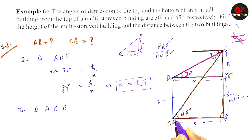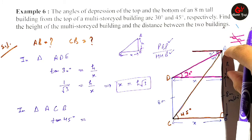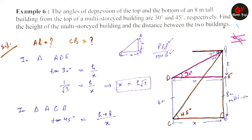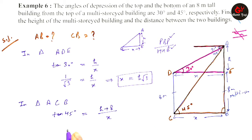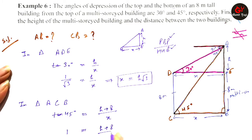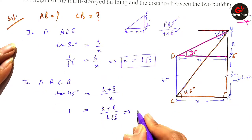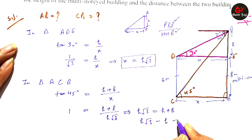Now in triangle ACV, we take the angle as 45 degrees. So tan 45° = (h + 8)/x, since the total height on that side is h + 8.